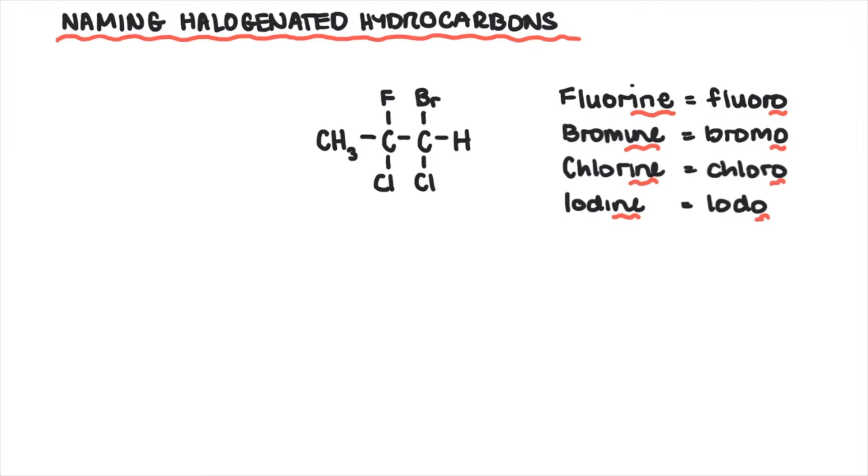The combination of the positions of the halogens must be given the lowest possible sum, and when finally written, they're placed in alphabetical order, ignoring any prefixes.